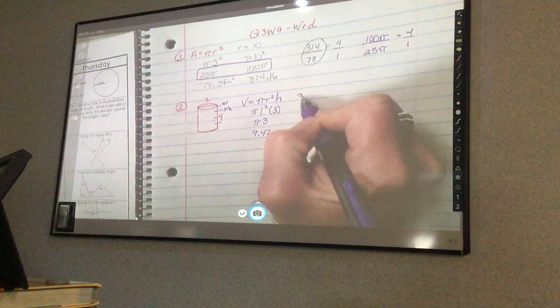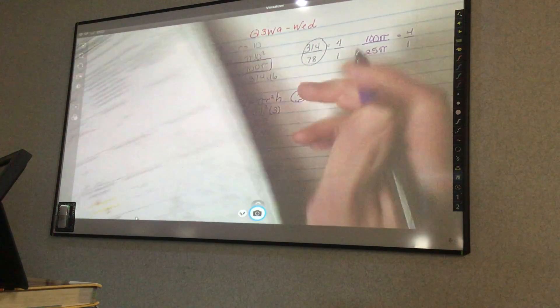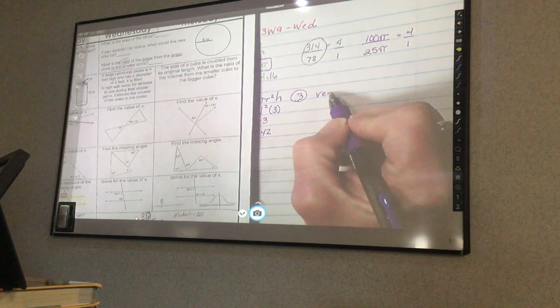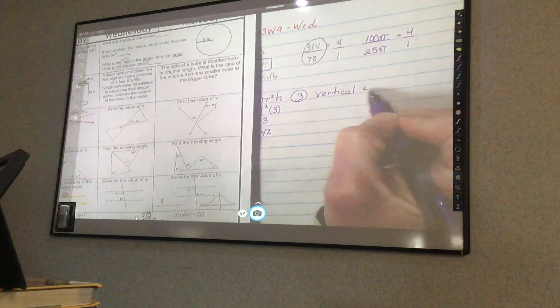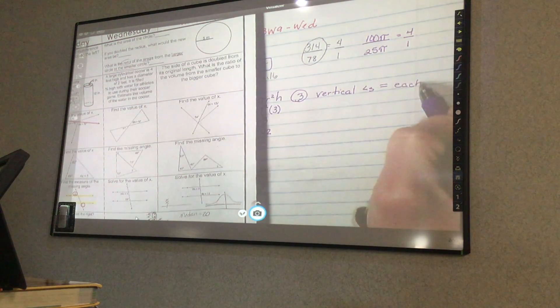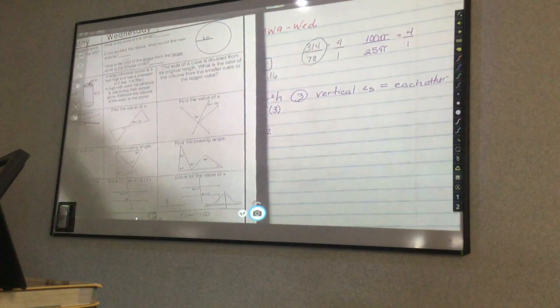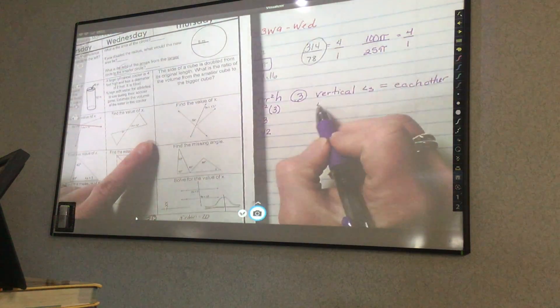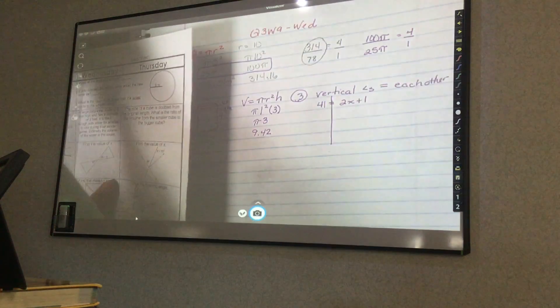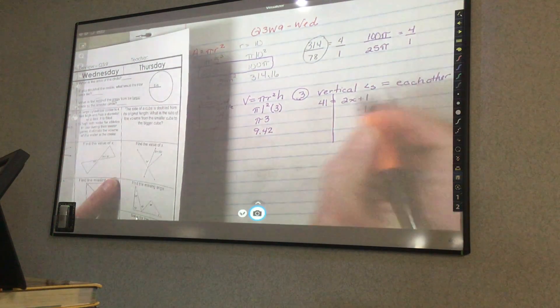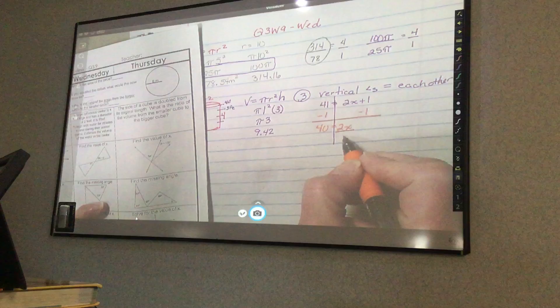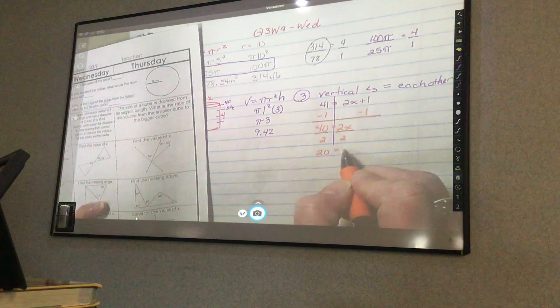Number 3. What kind of angles are those? What kind are they? Did you write it down? You didn't. Do it. Vertical angles. What's important about vertical angles? Yeah, you need to write that. Equal each other. So then now I want to solve it. So 41 equals 2x plus 1. Draw my line. Subtract 1 from both sides. So now I have 40 equals 2x. Divide by 2, divide by 2, 20 equals x.